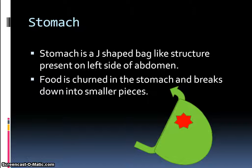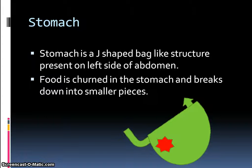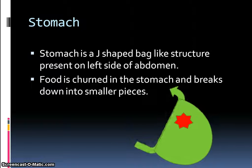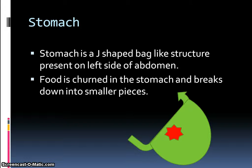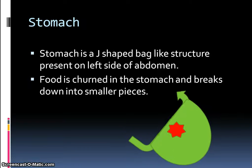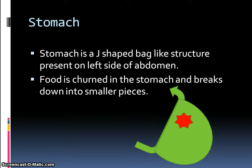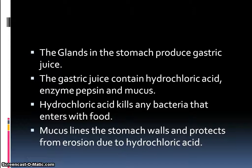The stomach is a J-shaped, bag-like structure present on the left side of the abdomen. Food is churned in the stomach and broken down into smaller pieces. The glands in the stomach produce gastric juice, which contains hydrochloric acid, the enzyme pepsin, and mucus.